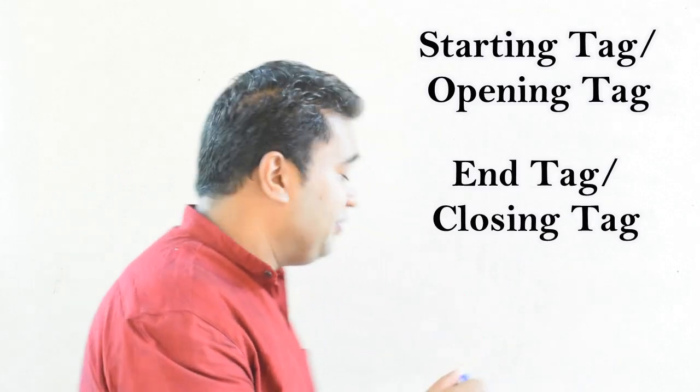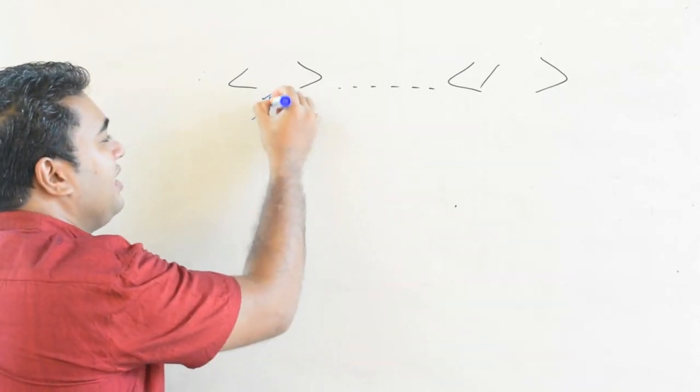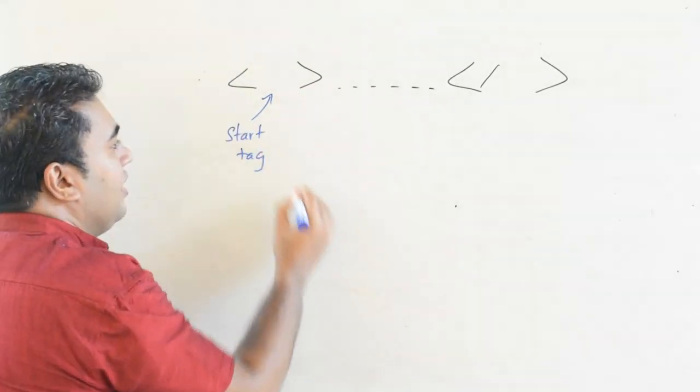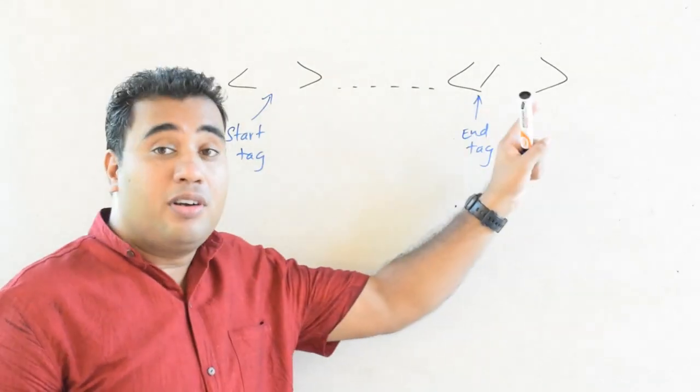When we discuss these tags, in HTML there are two types of tags: the starting tag, also called the opening tag, and the closing tag, also called the end tag. This is the way we write tags — this is the opening tag and this is the closing tag.